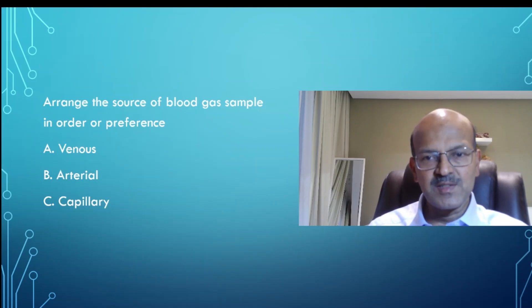Obviously, this is just to discuss which sampling method is preferable in what situation and whether you can use, for example, a venous sample. So the choices are A. Venous, B. Arterial and C. Capillary. I'll pause for a few seconds for you to think.